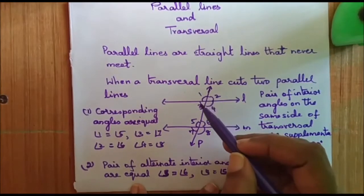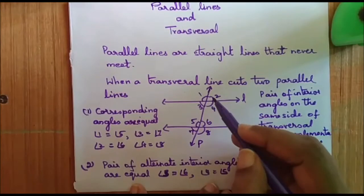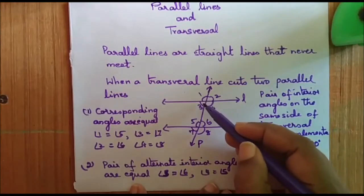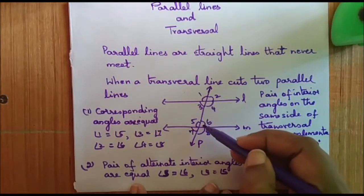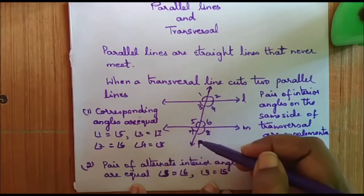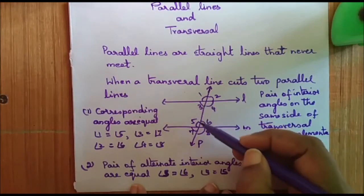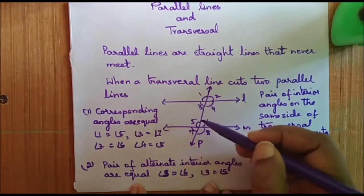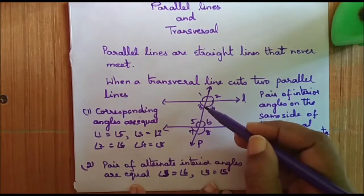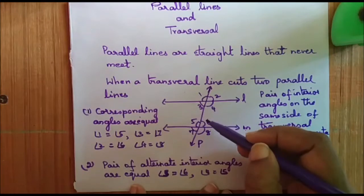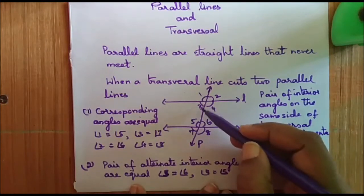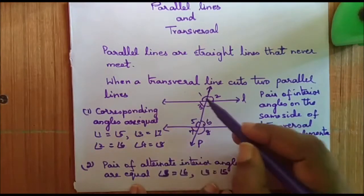What do we mean by alternate interior angles? Angle 3 and angle 6 are alternate angles and they are also interior angles. They lie opposite to each other but they are inside, so they are called the alternate interior angles. Alternate interior angles are equal.